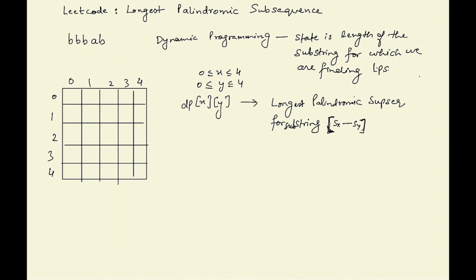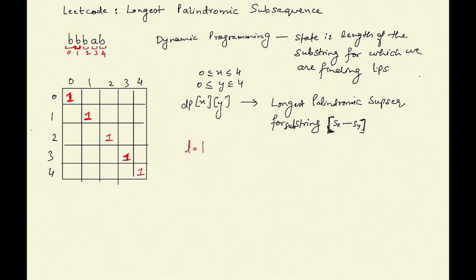Let's work through this example. First we consider all substrings of length 1. We have five substrings of length 1. For dp[0][0] we consider the substring that starts and ends at 0. We know that if there is only one character, the longest palindrome we can make is of length 1. So for all substrings of length 1 the answer is 1.